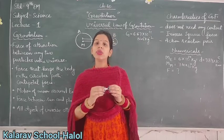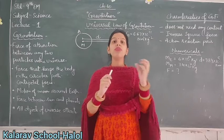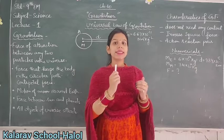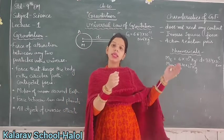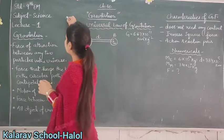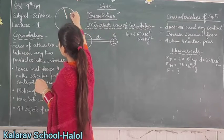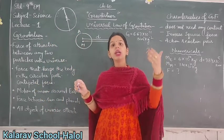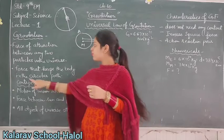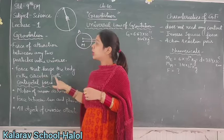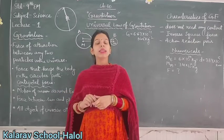When we tie a stone to a thread and allow it to move in a circular path, the stone revolves around the axis in a fixed path. This means there is a force between the axis and the outer side of the circle. The force that allows a body to move in a circular path, always acting towards the center, is called centripetal force.